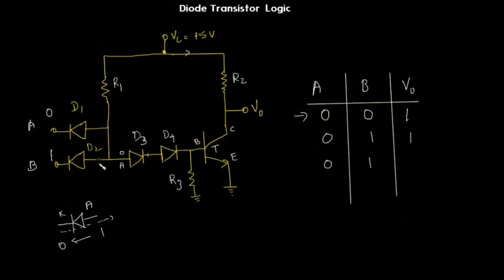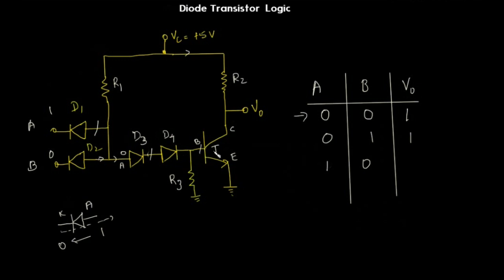For input 1,0: the cathode of diode D1 is connected to high voltage, so D1 will not conduct — it is cut off. Diode D2 will conduct, and the low voltage from D2 will propagate to D3. Since the anode of D3 is getting low voltage, D3 is not going to conduct, D4 will not conduct, and transistor T will not conduct because the base of the transistor is low. The transistor is in the cutoff region, so power will flow to V₀, giving a high output.